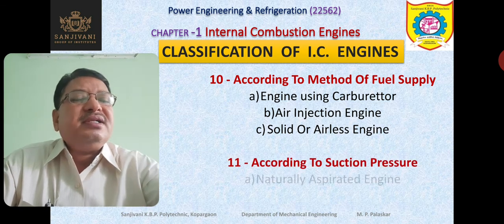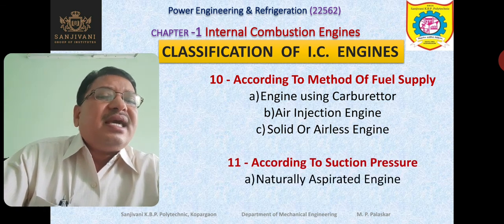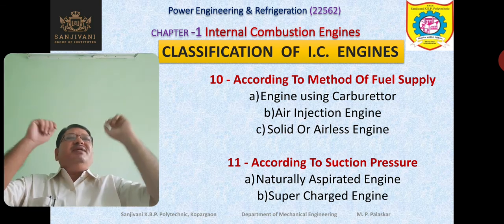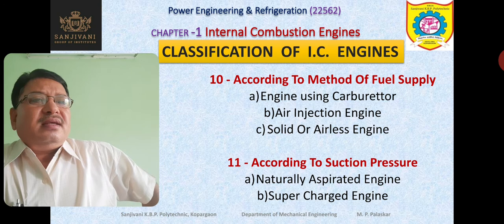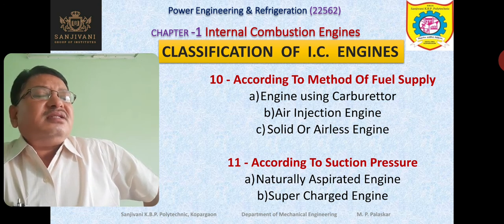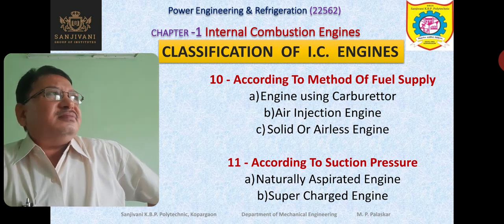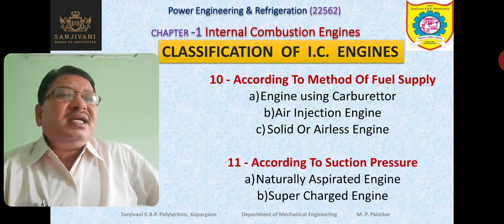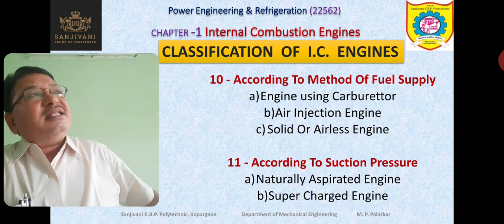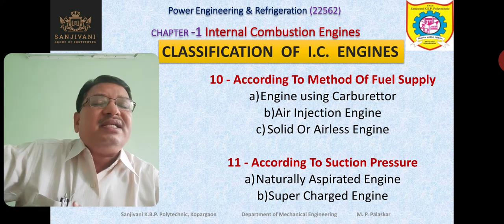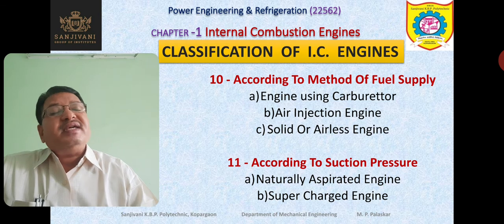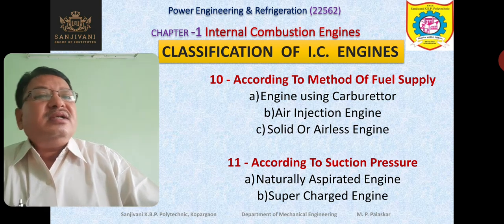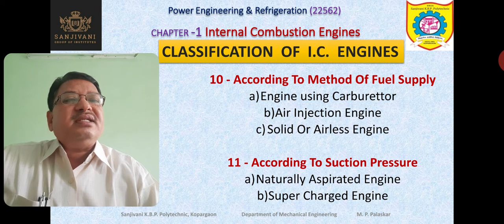According to the suction pressure, engines are classified as naturally aspirated engines or supercharged engines. Naturally aspirated engines have no compressed air supplied — air is sucked naturally from the atmosphere. In a supercharged engine, the air is pressurized and its density is increased, then supplied to the engine so that power output can be increased. When more air is supplied, more oxygen is available, we can supply more fuel in the same engine and obtain more power. Such engines are called supercharged engines.